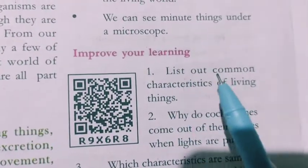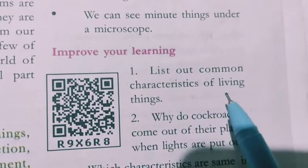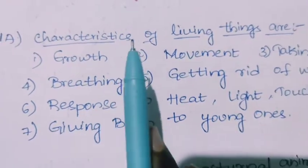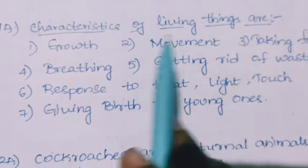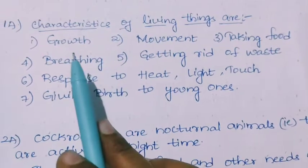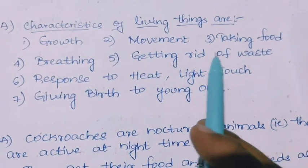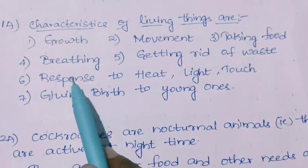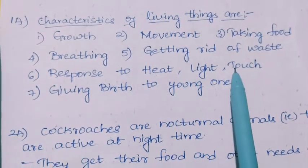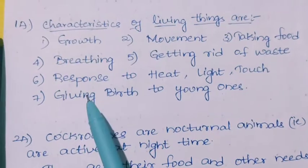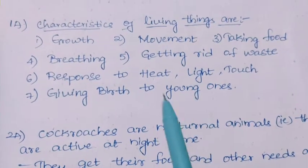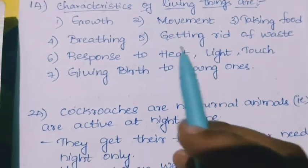The first question is: list out common characteristics of living things. The characteristics of living things are growth, movement, taking food, breathing, getting rid of waste (that is excretion), response to heat, response to light, response to touch, and giving birth to young ones, that is reproduction.